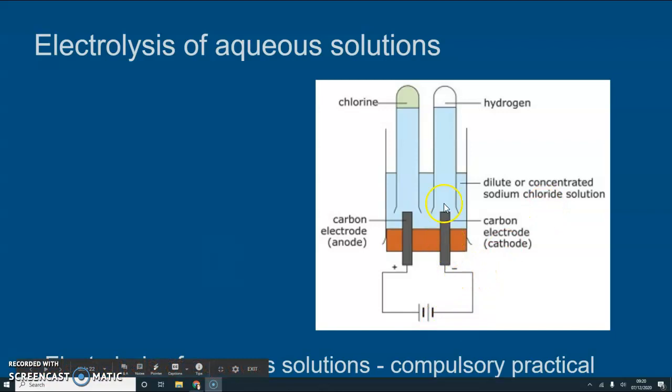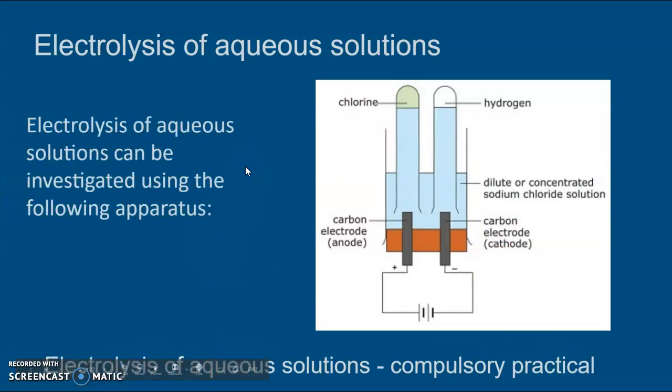But if you look at the other electrode, the negative electrode, you've got hydrogen there from sodium chloride. Where's that hydrogen come from and why do we get hydrogen? We won't explain fully why but I'll give you a rule to help you explain why hydrogen is formed and not sodium. We've got another compulsory practical coming up but don't worry about that at the moment.